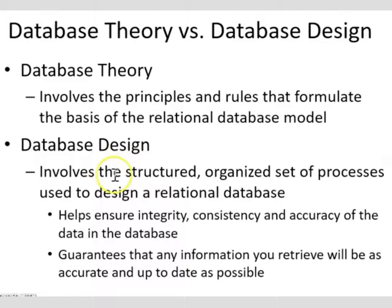Database theory involves the principles and rules that formulate the basis of the database. Database design involves a structured, organized set of processes used to design a relational database. Using good design helps ensure integrity, consistency, and accuracy of the data. Ideally, it can guarantee that any information you retrieve will be as accurate and up-to-date as possible. Those are the characteristics of a good database design — a bad design may mean some of these guarantees do not hold.